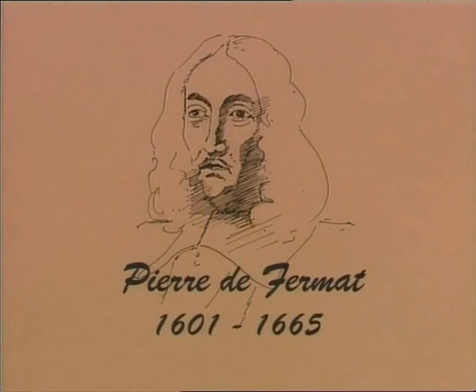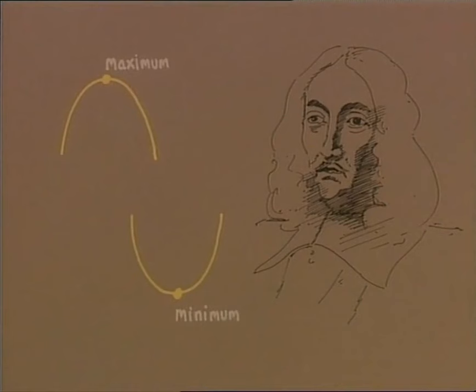But there was another man waiting in the wings, the lawyer, Pierre de Fermat, down in Toulouse, who had a great passion for mathematics and made huge contributions to it. In 1629, at the same time as Descartes, he began to apply analytic geometry to the problem of finding maximum and minimum points on curves.